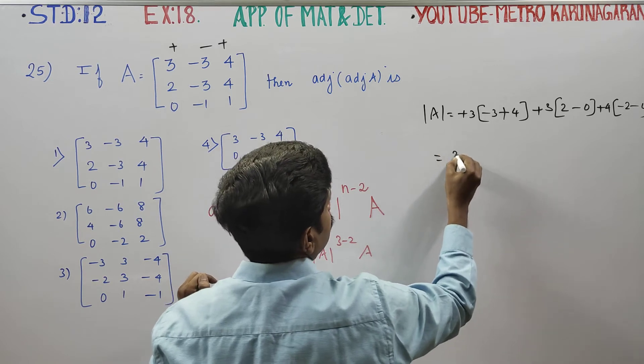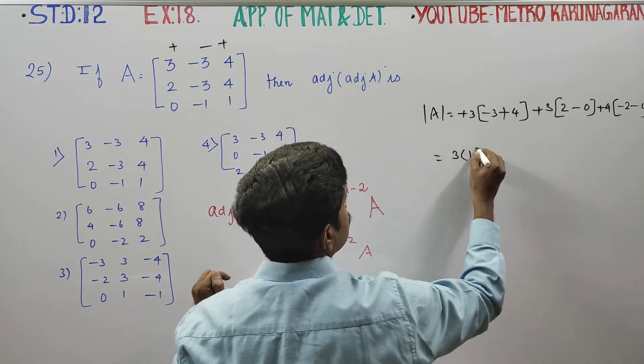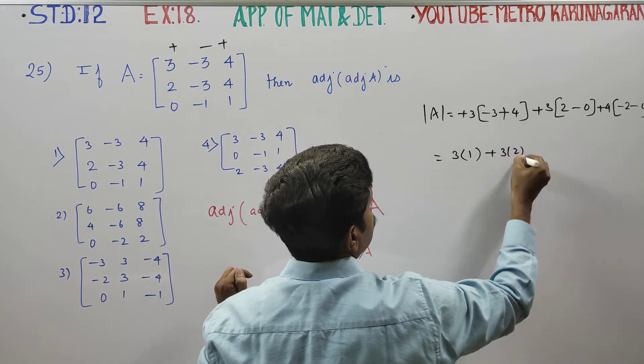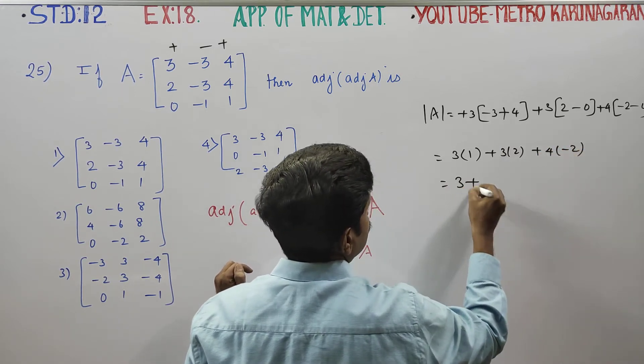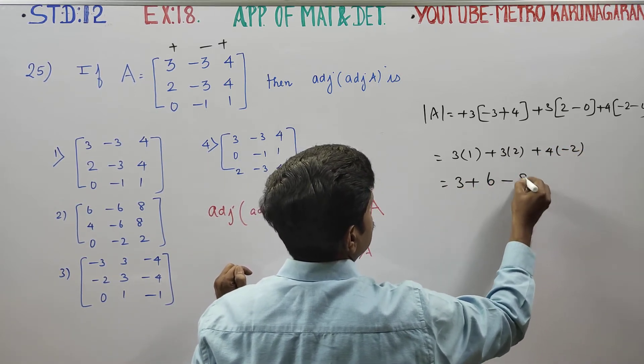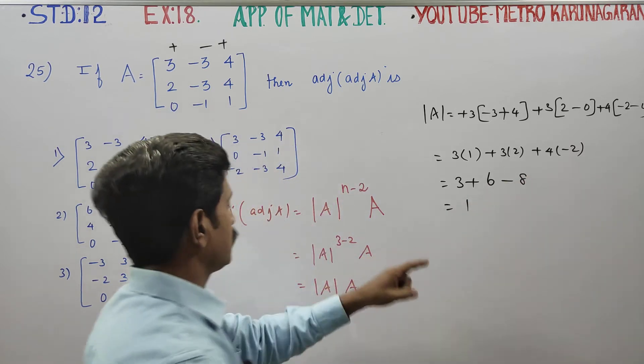Your answer will be 3 into 4 minus 3 is 1, plus 3 into 2, plus 4 into minus 2. This is 3, 6, minus 8. Answer is 1.